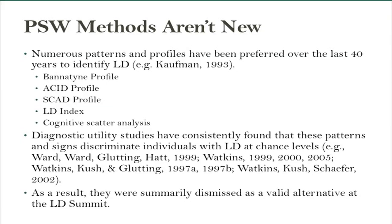Pretty much every diagnostic utility study that has looked at all these patterns has found that they discriminate LD at chance levels. There are too many kids that have those weird profiles who also don't have academic problems. There is error in our measurement and we cannot use it as a valid sign at the level of the individual.